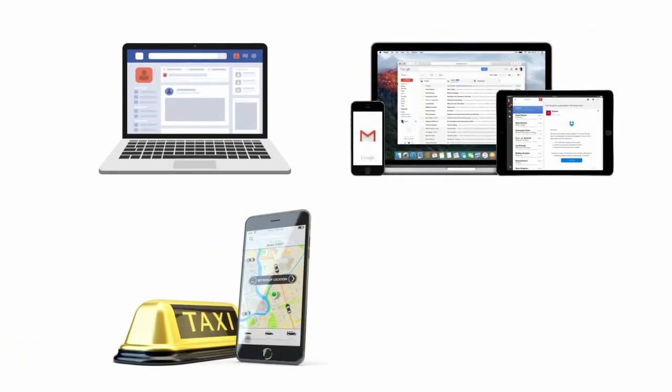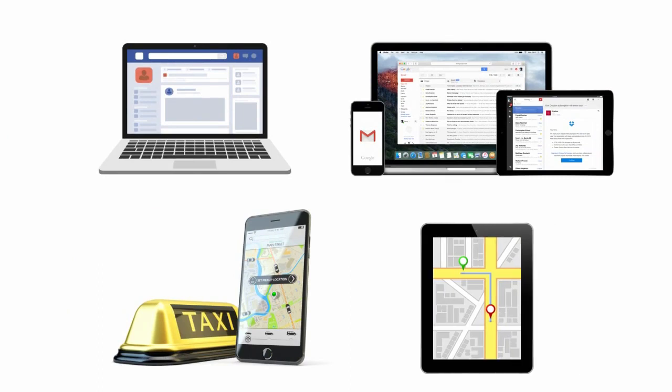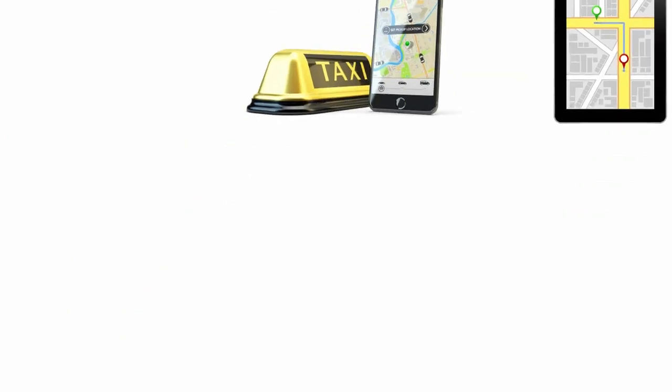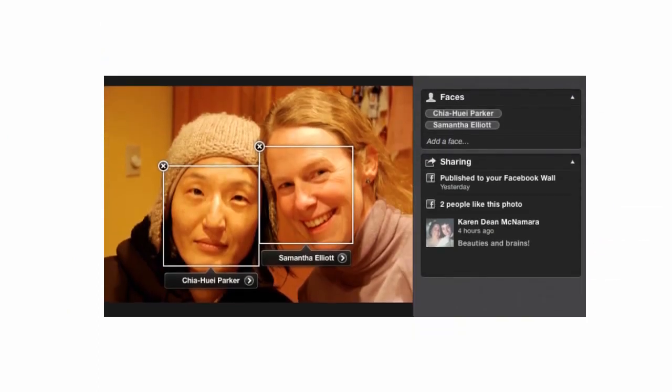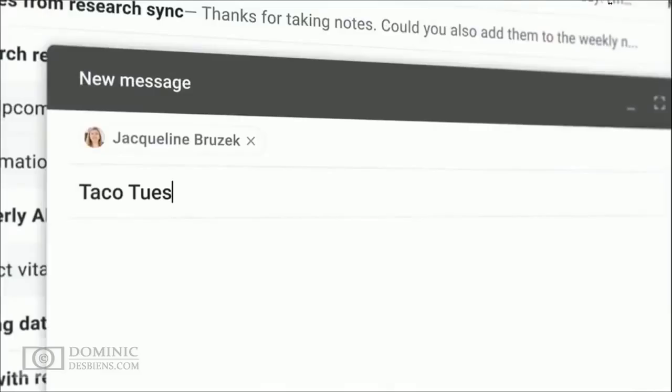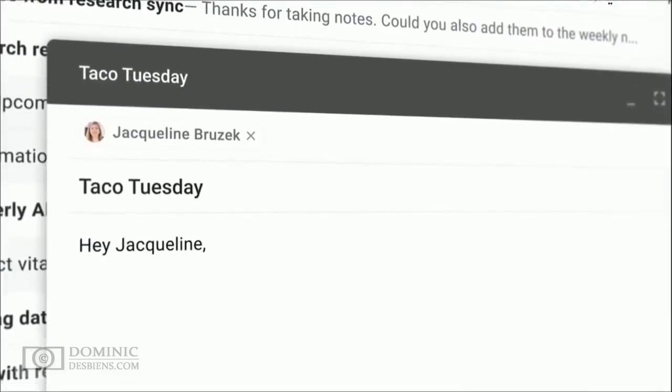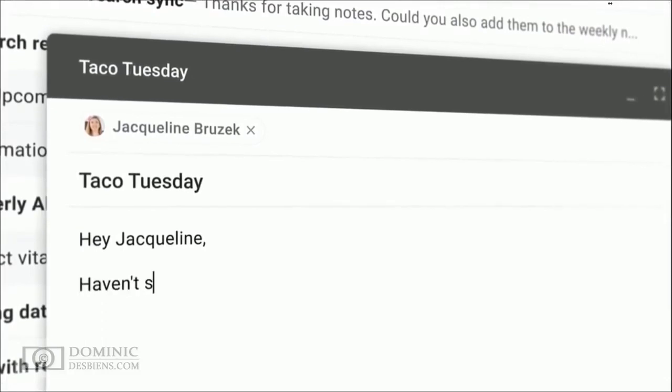In fact, many products and services we consume regularly use Machine Learning algorithms. For instance, when Facebook auto-tags your images, it is using Machine Learning. When Gmail composes your mail using Smart Compose, it is also using Machine Learning.